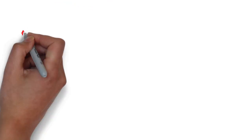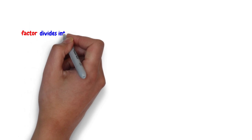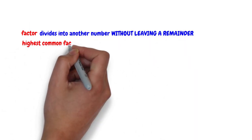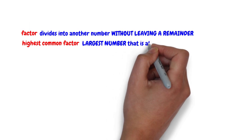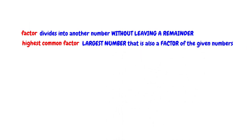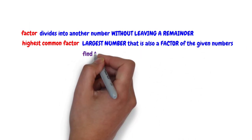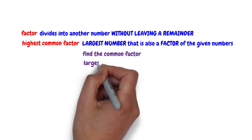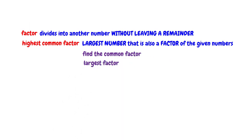To recap: a factor is a number that divides into another number without leaving a remainder. The highest common factor is the largest number that is also a factor of the given numbers. To find the highest common factor, first find the common factors of the given numbers. The largest common factor is the highest common factor.